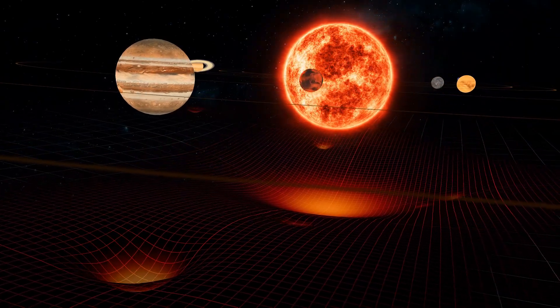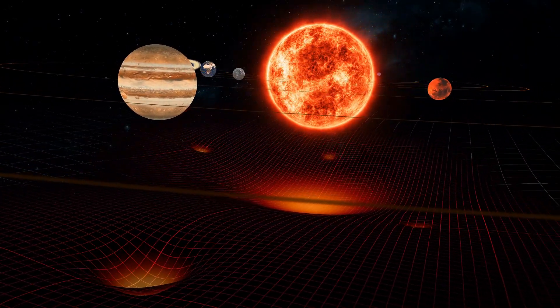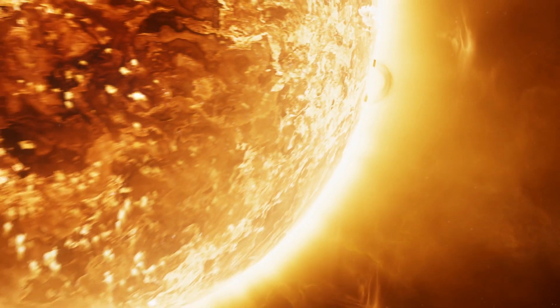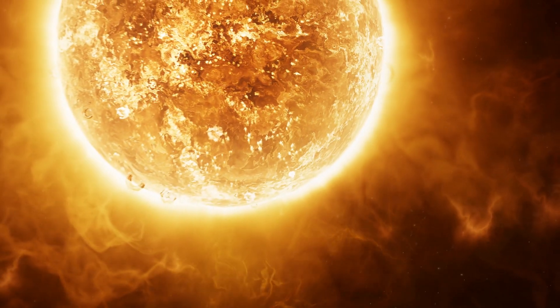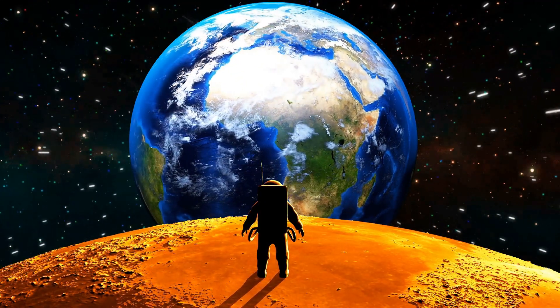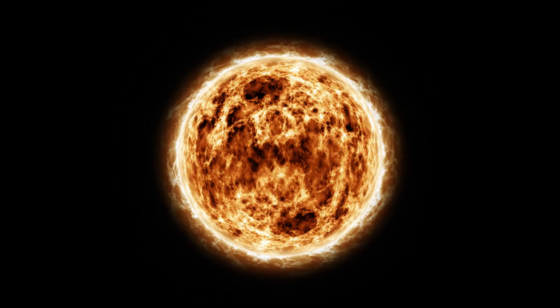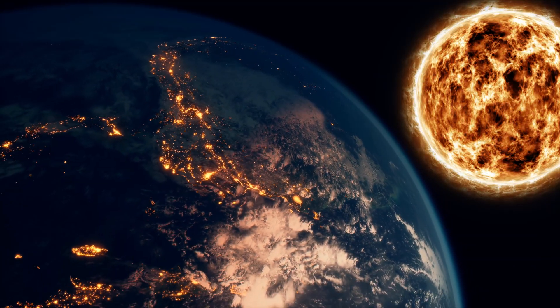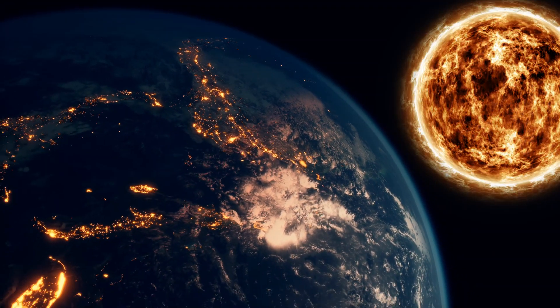We're about to dive into a world where the sun, usually gigantic and powerful, shrinks down to a size smaller than our planet. It's a crazy concept, but let's imagine together how things might change if this happened. A tiny sun, way smaller than our Earth, shining up there. It's a complete role reversal.